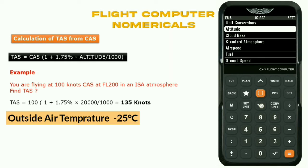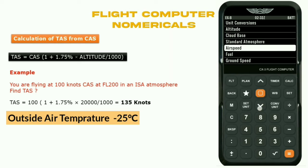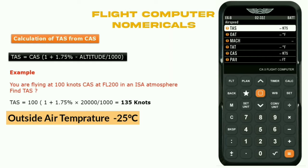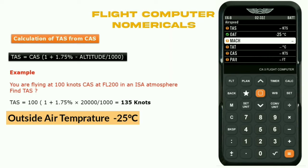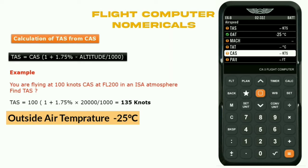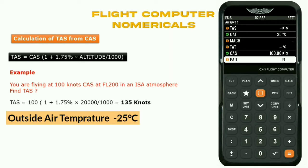Now we put all the data into the CX3 flight computer. We go to air speed and press enter. First we put outside air temperature — we set the unit to degrees Celsius and enter minus 25 degrees. Then CAS is 100 knots — enter 100. Pressure altitude is 20,000 feet — enter 20,000 feet. We get a TAS of 136 knots.